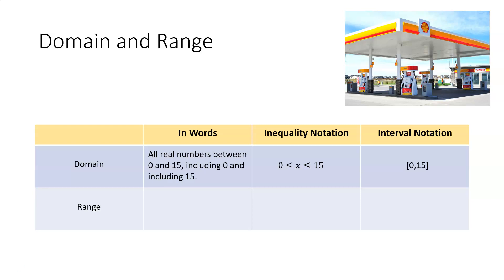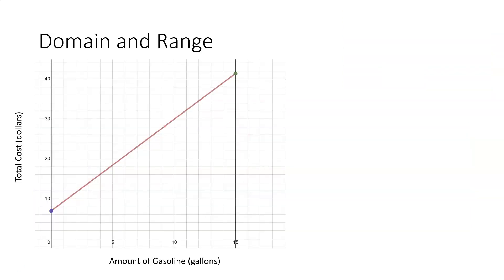Now before we start talking about the range, I wanted to show you the graph of our linear function on the xy-plane. The x values represent the amount of gasoline in gallons, and the y values represent the total cost in dollars.